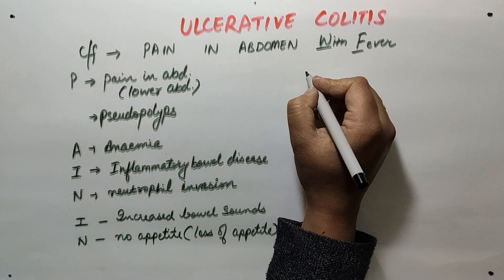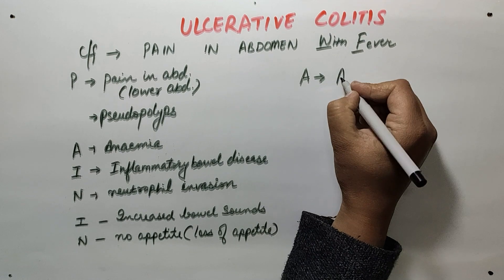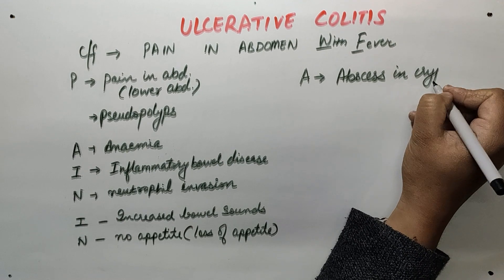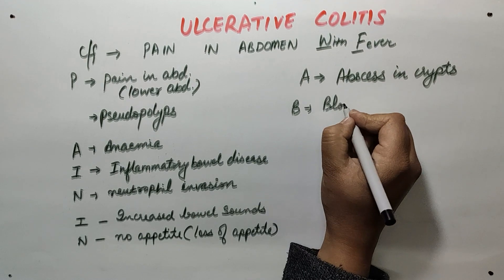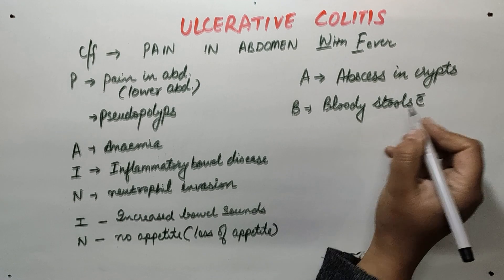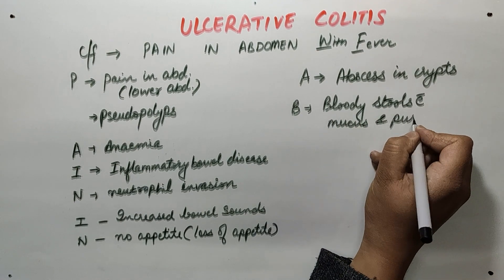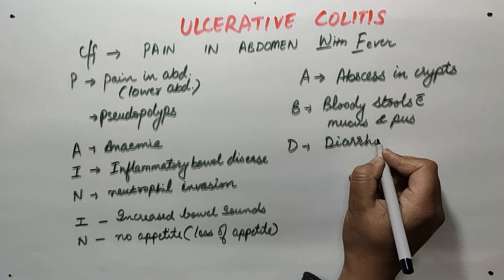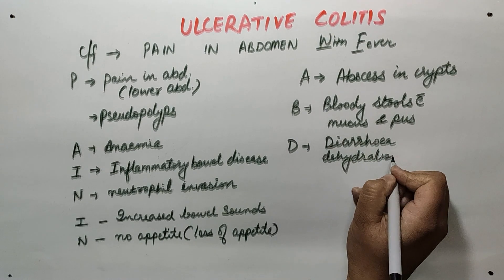Now for 'ABDO': A from abdomen stands for abscess in crypts. B stands for bloody stools with mucus and pus. D stands for diarrhea and dehydration.